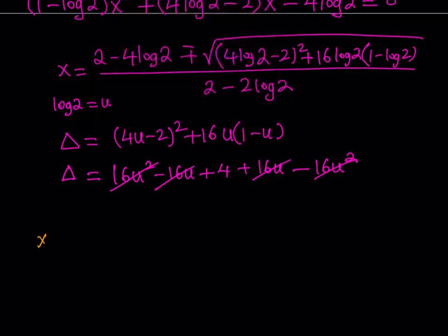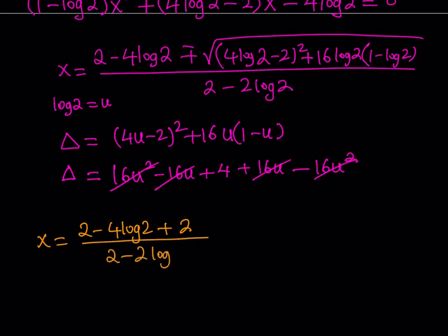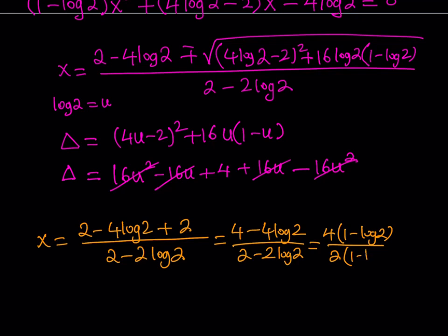So, that means that this is actually real simple to solve. I can write it as x equals 2 minus 4 log 2 plus square root of 4, which is 2, divided by 2 minus 2 log 2. This is going to give me 4 minus 4 log 2, divided by 2 minus 2 log 2. And if you factor out a 4 here, you get 1 minus log 2. Cross these out, and you end up with x equals 2. Beautiful. So, it just verified that x equals 2 is a solution. We knew that.